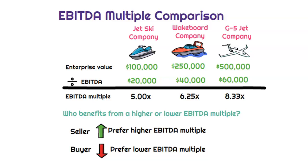Here we're going to talk about EBITDA multiples and how we can compare different companies that are in the same industry or maybe a related industry. As you can see, enterprise values for these three companies are very different, and each company also generates a different level of EBITDA. To calculate EBITDA multiples, it's pretty simple — you just take enterprise value divided by EBITDA, whether it's from the current year or forecasted EBITDA, and that gives you your EBITDA multiple.